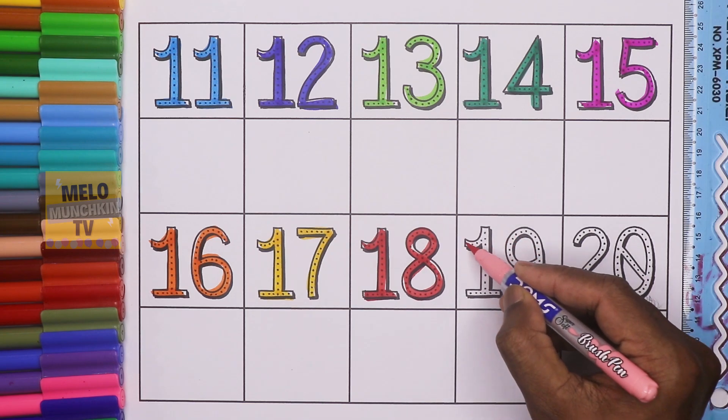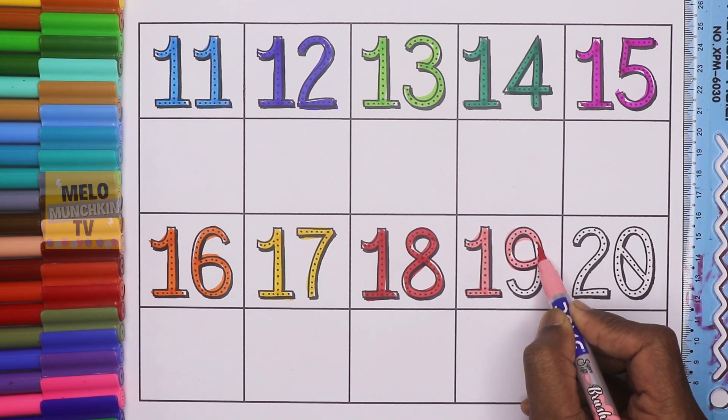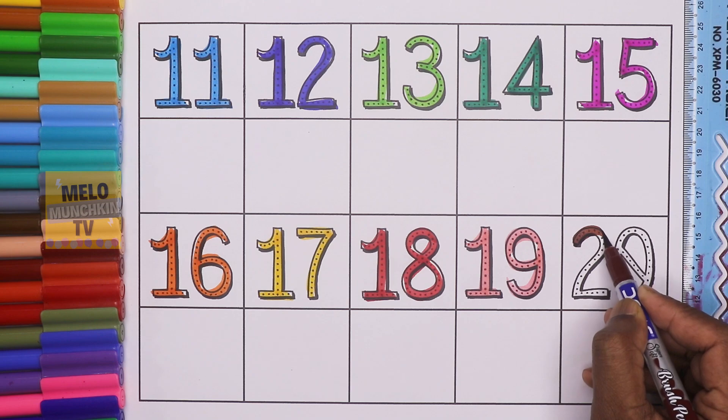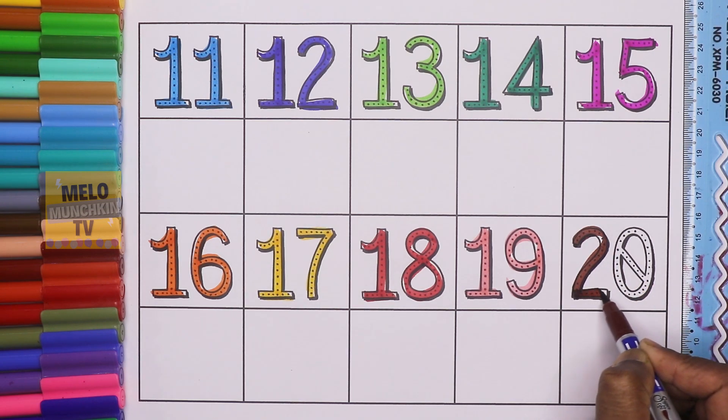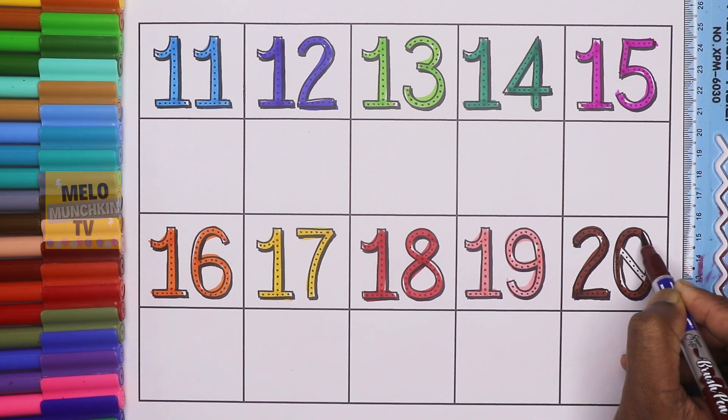This is 19. 1, 9, 19. This is 20. 2, 0, 20.